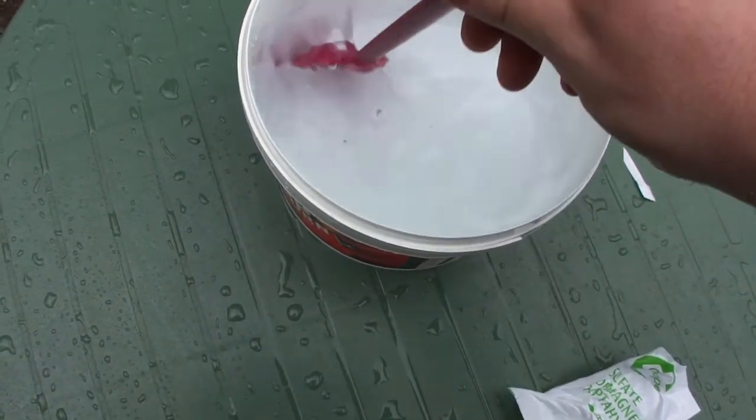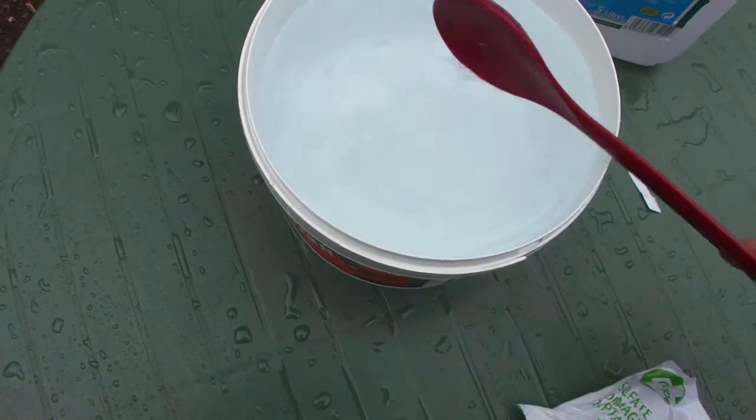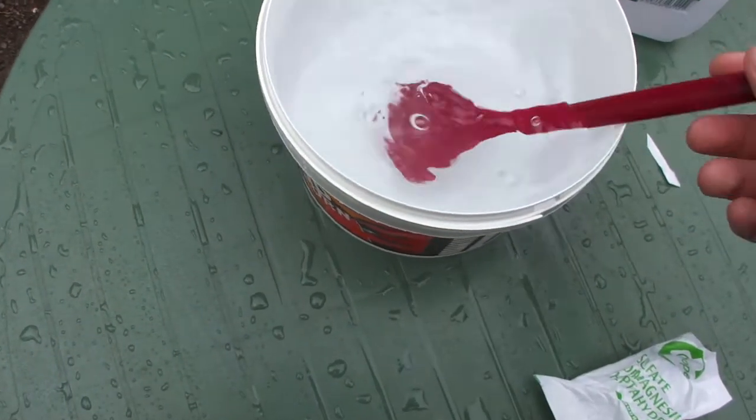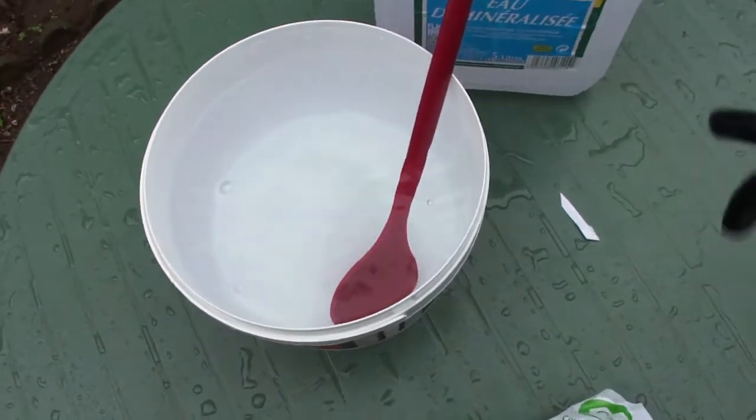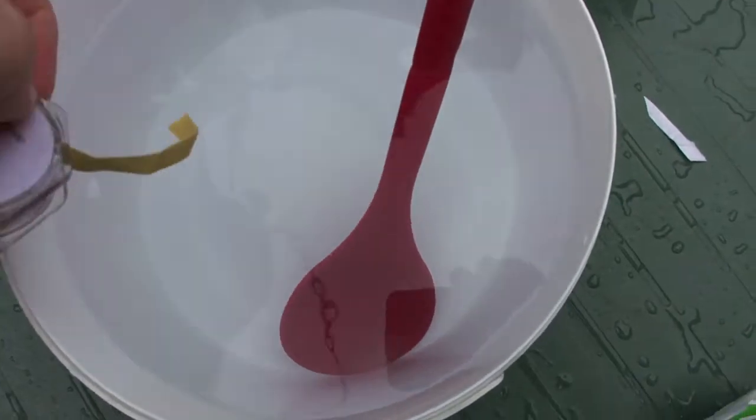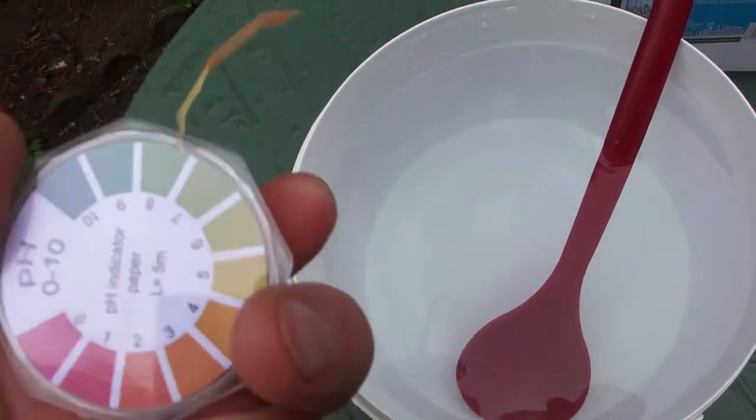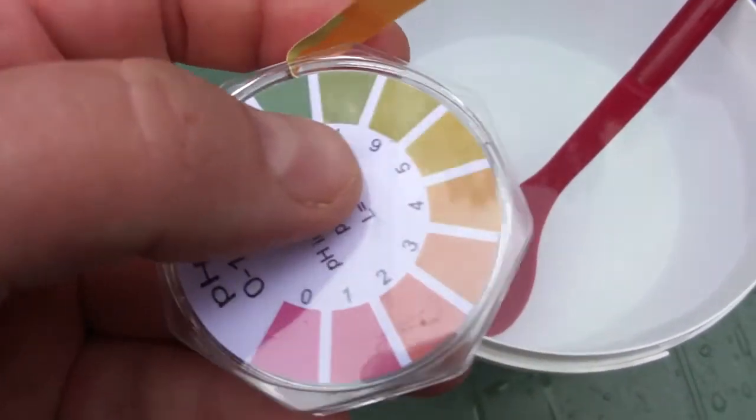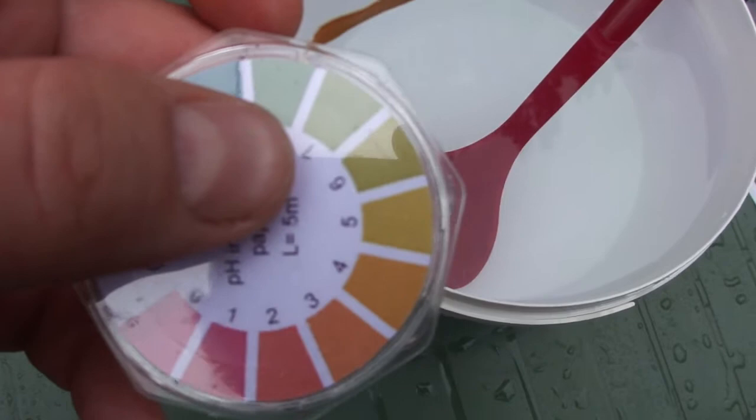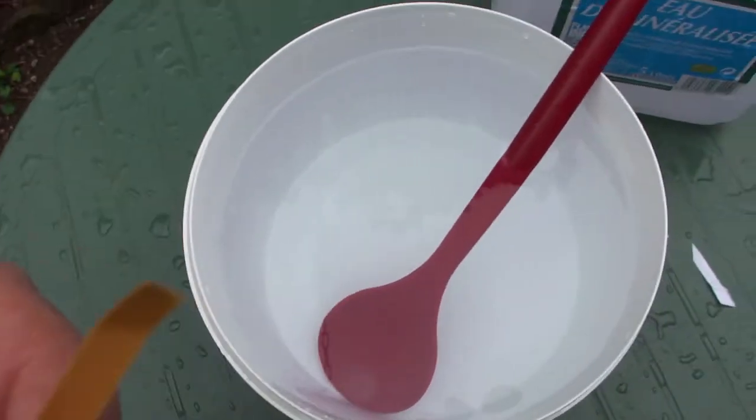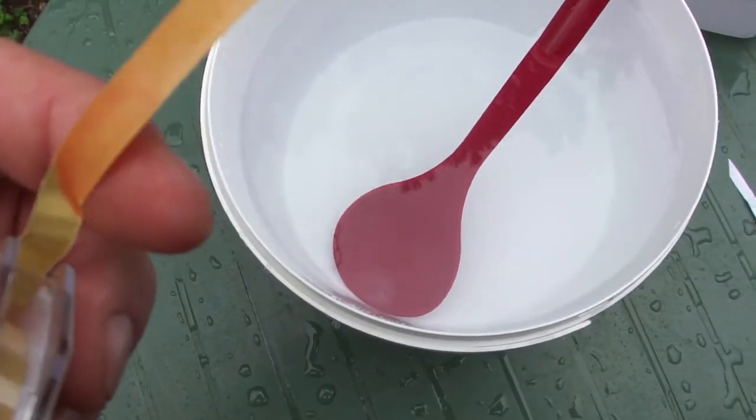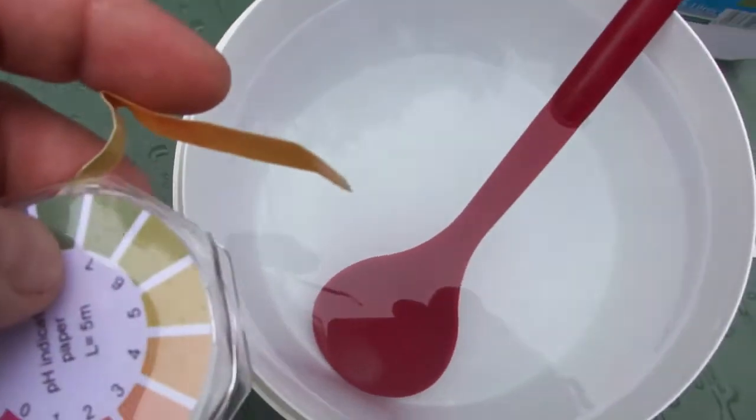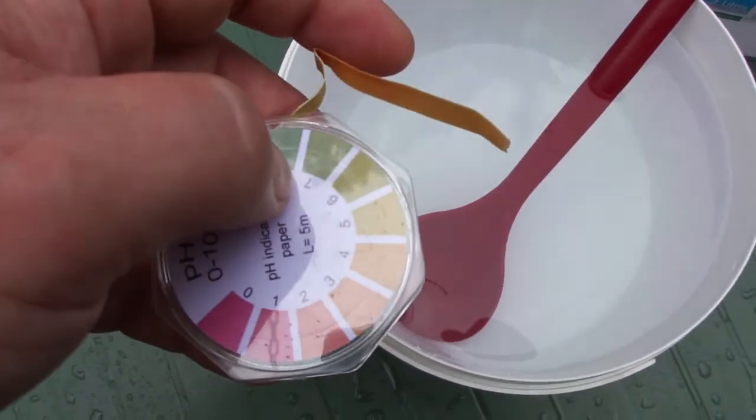Let's check now the pH level. Let's see what it has got now. It's got about pH level 5, maybe a little bit pH level 4. I will be back when I have poured it into the battery then. Bye now.